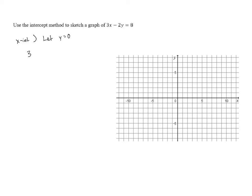If we do that, we have 3x minus 2 times y, which we said was 0, so we'll substitute in 0, equals 8. 2 times 0 is just 0, so this is 3x minus 0 equals 8.